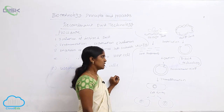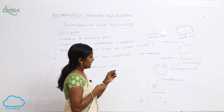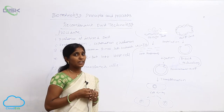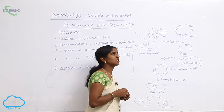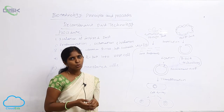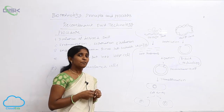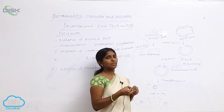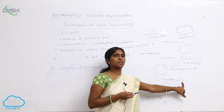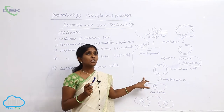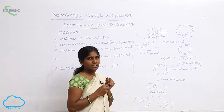The recombinant vector is produced, but only one copy exists. More copies are needed, so it goes for multiplication through gene cloning. The same clones are produced within the bacteria. To introduce the recombinant vector into the bacterial cell, the process is called transformation. Gene cloning depends on the entry of the recombinant vector into the bacterial cell through transformation.